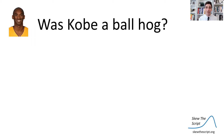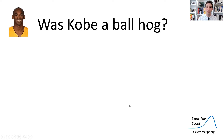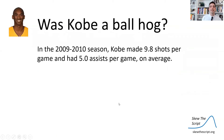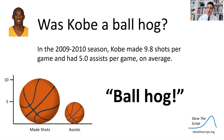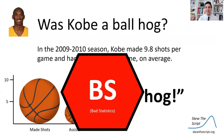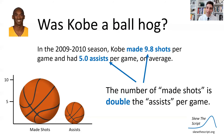There's a big debate about whether Kobe Bryant was a ball hog. Everyone agrees he was a great player, but people wondered if he would have been more effective as a teammate if he passed more. In the 2009–2010 season, Kobe made 9.8 shots per game and had 5 assists per game — assists being when you pass to a teammate and they make a shot. We can visualize that data, and you might think it looks like Kobe was in fact a ball hog. But this visual is BS — it is misleading. Here's why.